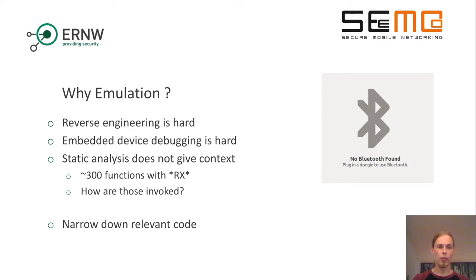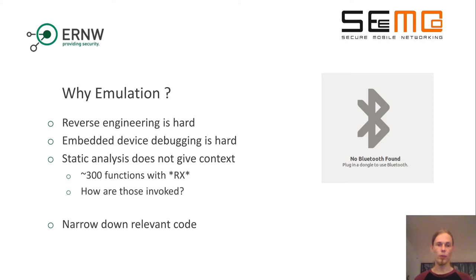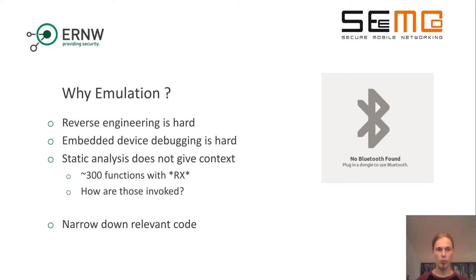In our research, we are using emulation. The reason for this is that reverse engineering is hard, especially on embedded devices where even debugging can be quite hard. Normally, you would face such a problem with an unknown firmware by running static analysis — you have a look at the code. But the problem is that, for our example, we have 300 functions somehow related to packet reception, and we do not really know how those functions are invoked or their context. So even if you look at each individual function in detail, you are missing the bigger picture of how the whole firmware is working and how the components interact. If you simply run the code and emulate it, you can narrow down the code of interest, because you only have to focus on code that is actually executed, reducing the amount of code that has to be analyzed.